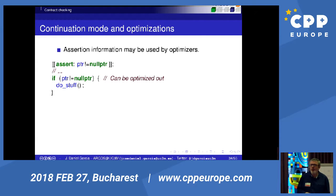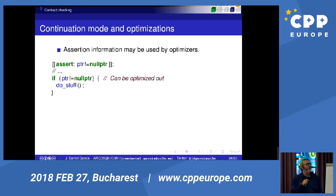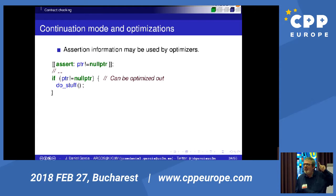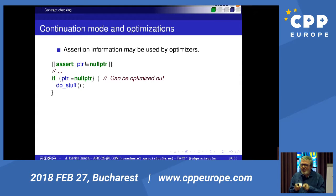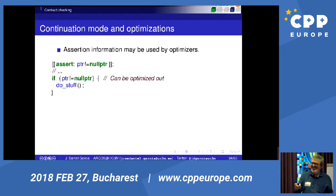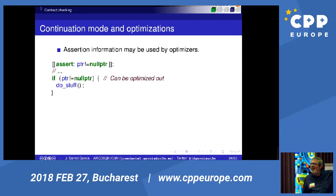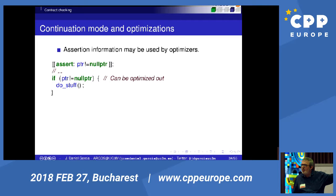Assertions might be used by optimizers. This is important because it means that an assert in contracts is not the same as today's C assert macro. This is something real that your compiler understands, and because your compiler understands it, it can feed that information to the optimizer.